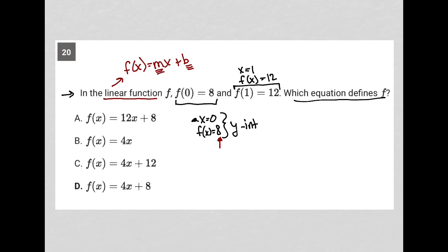So if I know my y-intercept is 8, that means my answer should have an 8 in this b position. I see that for choice A, I see that for choice D. I do not see it for B or C, so those are immediately gone.